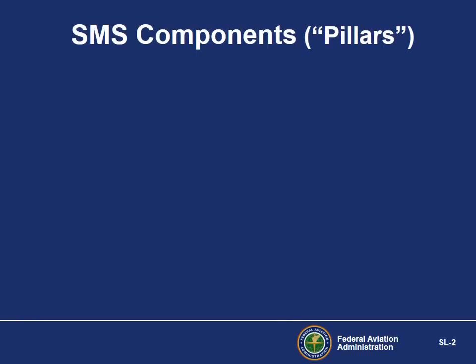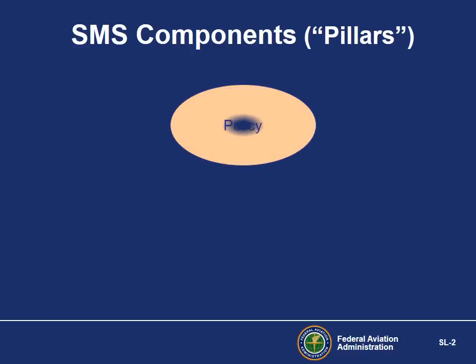A safety management system is composed of only four components. We'll briefly talk about each component now as an overview, and then go into much more depth shortly. The policy component defines top management's objectives and requirements. Policy provides the structure, procedures, and controls for SMS implementation and maintenance. Procedures and controls are essential safety attributes in the design of robust systems.